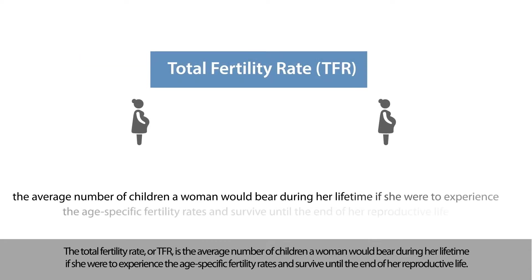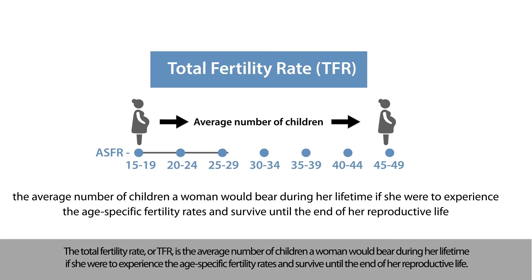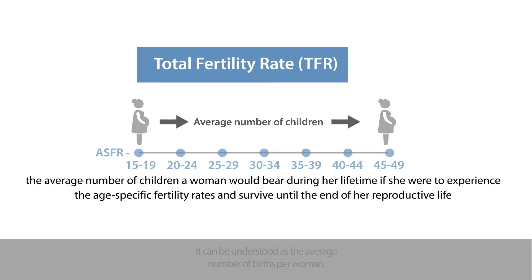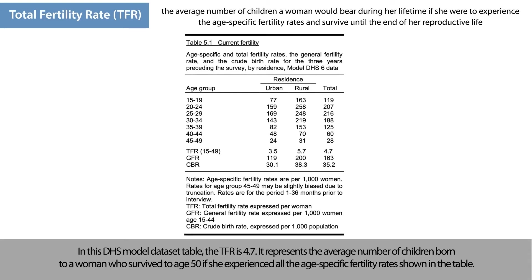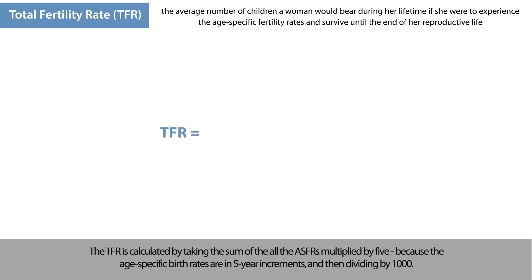The total fertility rate, or TFR, is the average number of children a woman would bear during her lifetime if she were to experience the current age-specific fertility rates and survive until the end of her reproductive life. It can be understood as the average number of births per woman. In this DHS model dataset table, the TFR is 4.7, representing the average number of children born to a woman who survived to age 50 if she experienced all the age-specific fertility rates shown in the table. The TFR is calculated by taking the sum of all the ASFRs multiplied by 5, because the age-specific birth rates are in 5-year increments, and then dividing by 1,000.